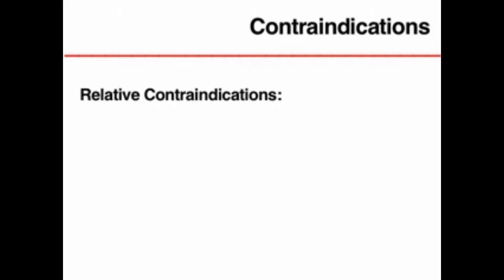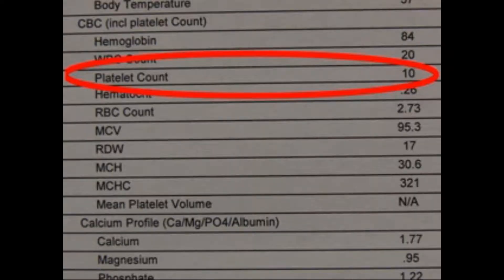There are relative contraindications mainly based on hematologic abnormalities, such as bleeding diatheses or coagulopathy. Blood products or coagulation factors may need to be transfused in order to reduce the risk of bleeding during the procedure.